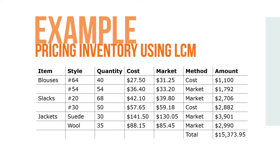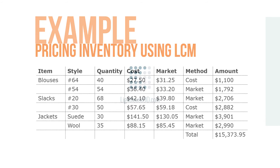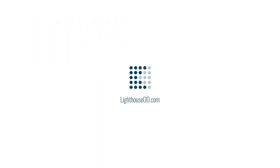For example, style number 44 blouse will be valued at the cost of $27.50 because it's less than the market price of $31.25. The extension would be 40 times $27.50, which equals $1,100.